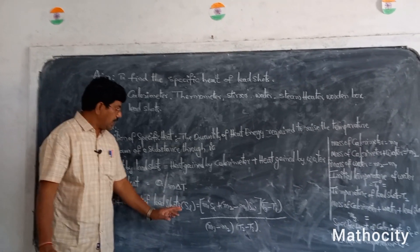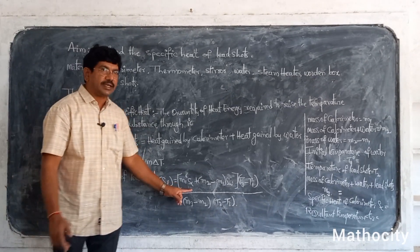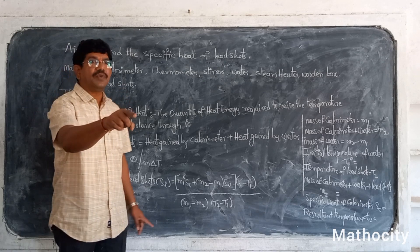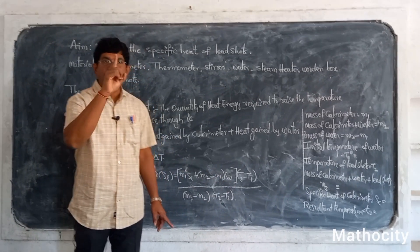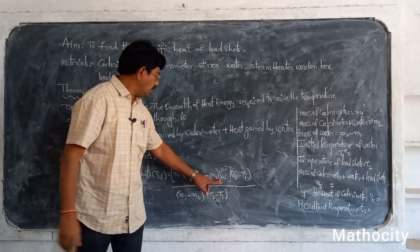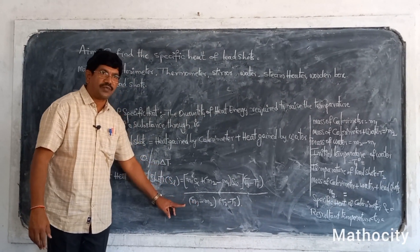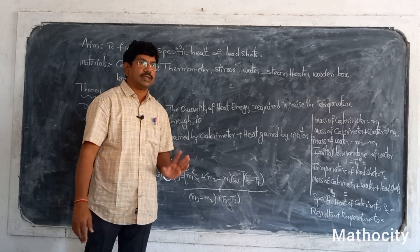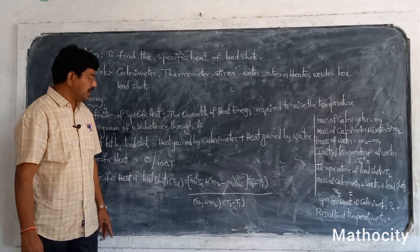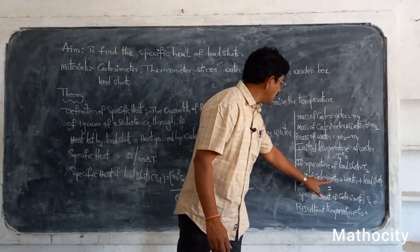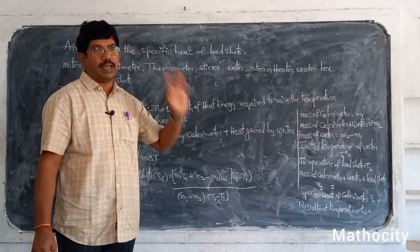The specific heat of the lead shots is found with this formula: M1 into SC — where SC stands for specific heat of the calorimeter, because it is made up of copper — plus (M2 minus M1) into specific heat of water, which is 1 calorie per gram degree centigrade, multiplied by (T3 minus T1), divided by (M3 minus M2) into (T2 minus T3). Here M3 stands for the mass of the calorimeter plus water plus lead shots.